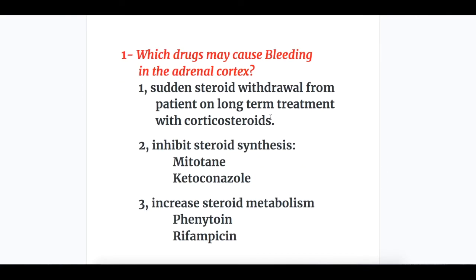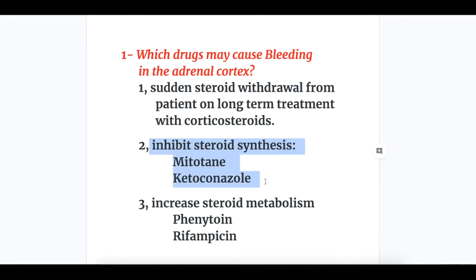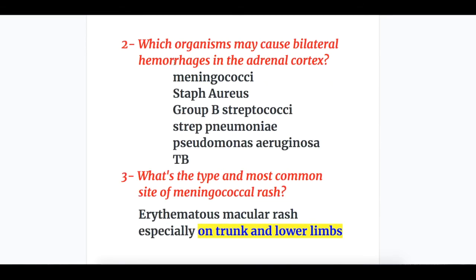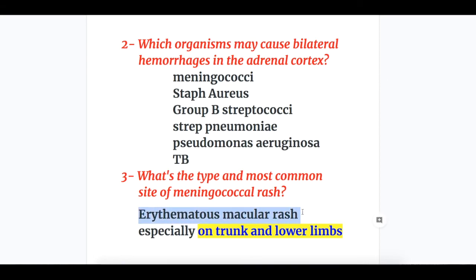Answers to the exam questions. Question one — drugs causing bleeding in the adrenal cortex: steroid withdrawal in patients on corticosteroids; drugs that inhibit steroid synthesis such as mitotane and ketoconazole; drugs that increase steroid metabolism such as phenytoin and rifampicin. Question two — organisms causing bilateral adrenal hemorrhages: meningococci, Staph aureus, Group B Strep, Strep pneumoniae, Pseudomonas aeruginosa, and tuberculosis. Question three — meningococcal rash: type is erythematous macular rash; most common site is the trunk and lower limbs, but it may also occur on other parts and mucous membranes.